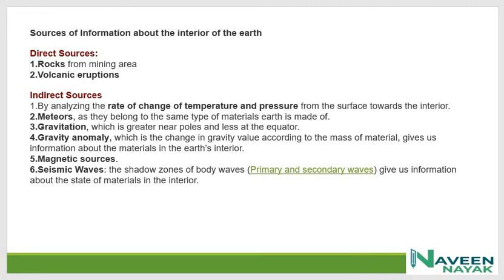Sources of information about the interior of Earth — direct sources: rocks from mining areas and volcanic eruptions. Indirect sources include: analyzing the rate of change of temperature and pressure from surface to interior; meteorites, as they belong to the same type of materials Earth is made of; gravitation, which is greater near poles and less at the equator; gravity anomaly, which is the change in gravity value according to mass of material; magnetic sources; and seismic waves — the shadow zones of body waves, primary and secondary waves, which give us information about the state of materials in the interior.